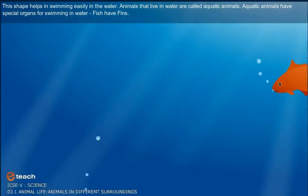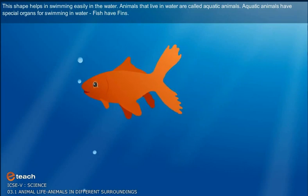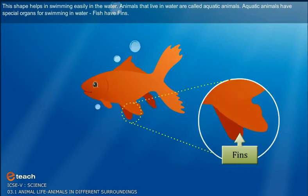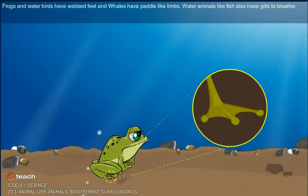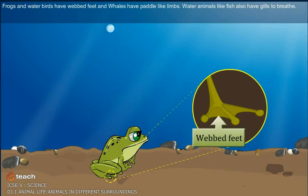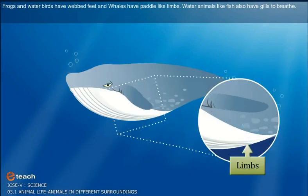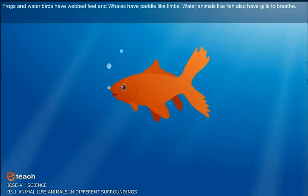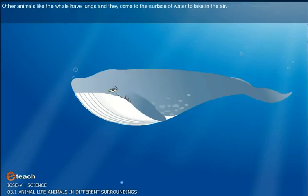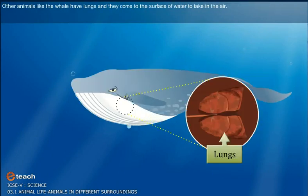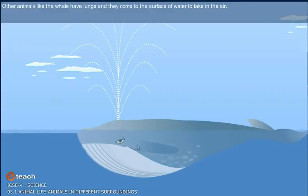Aquatic animals have special organs for swimming in the water. Fish have fins. Frogs and water birds have webbed feet, and whales have paddle-like limbs. Water animals like fish also have gills to breathe. Other animals like the whale have lungs, and they come to the surface of the water to take in air.